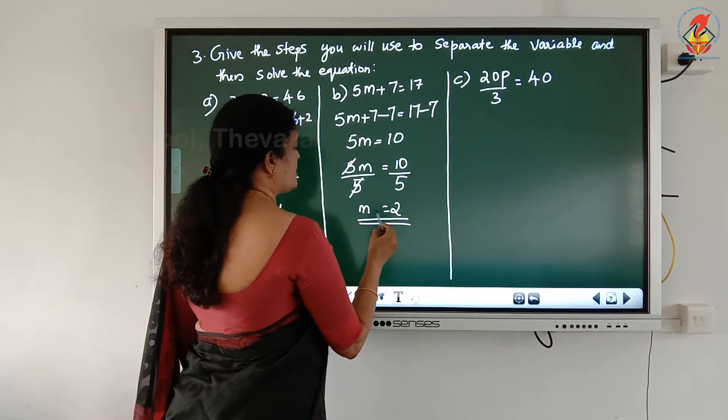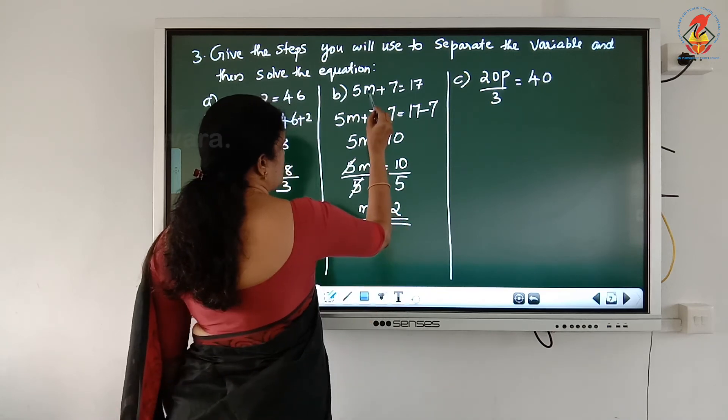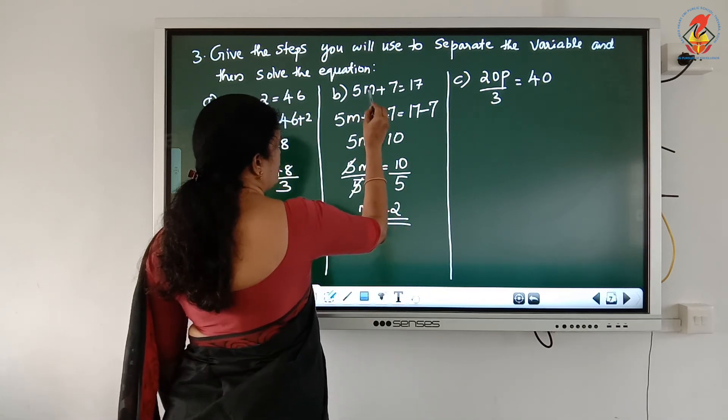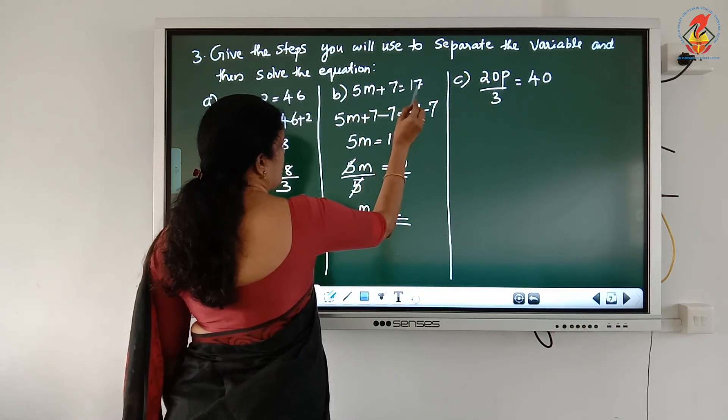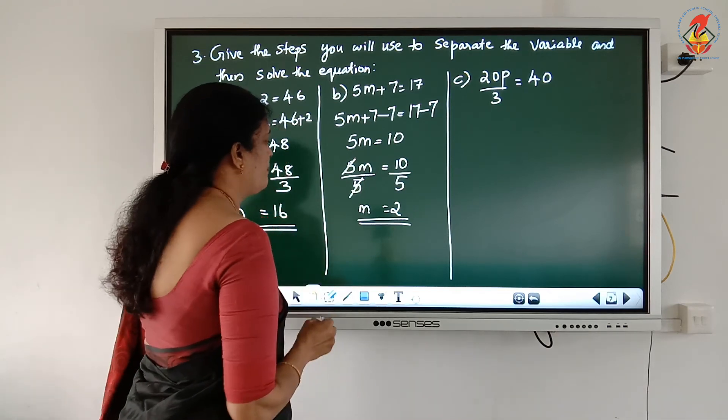How can you check your answer? Substitute 2 in the place of m: 5 multiplied by 2 = 10, and 10 plus 7 = 17. LHS equals RHS, confirmed.